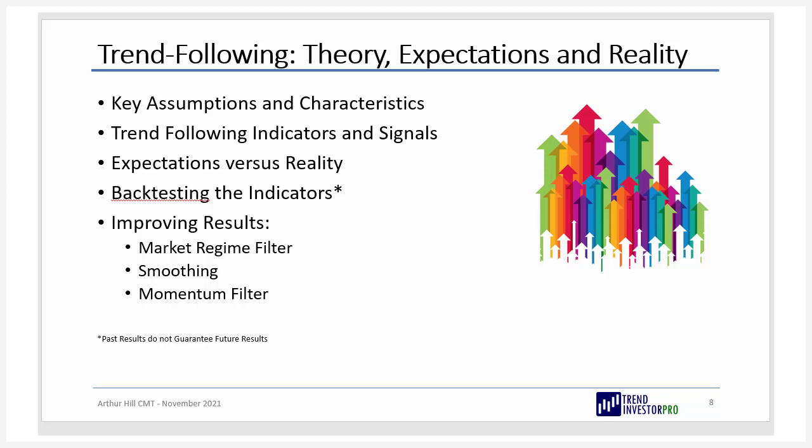We'll go over the key assumptions and characteristics of trend following strategies. We're going to look at a number of indicators and the signals that are generated, and then expectations versus reality. You know, you look at a 20-year chart — the returns on trend following look great, but getting to those great returns is not always a smooth ride. It's often bumpy. So we're going to backtest these indicators to set our expectations, and then I'm going to show you how to improve results by adding a market regime filter, smoothing with a moving average, and adding a momentum filter to capture excess performance.